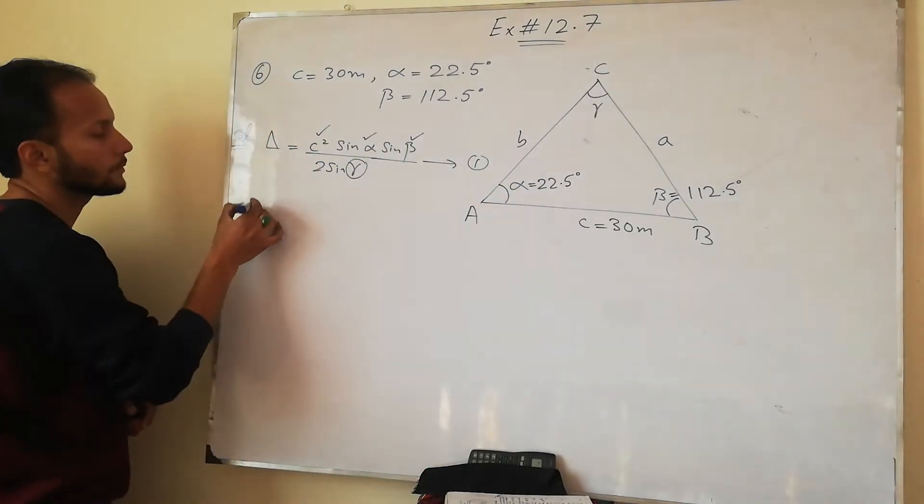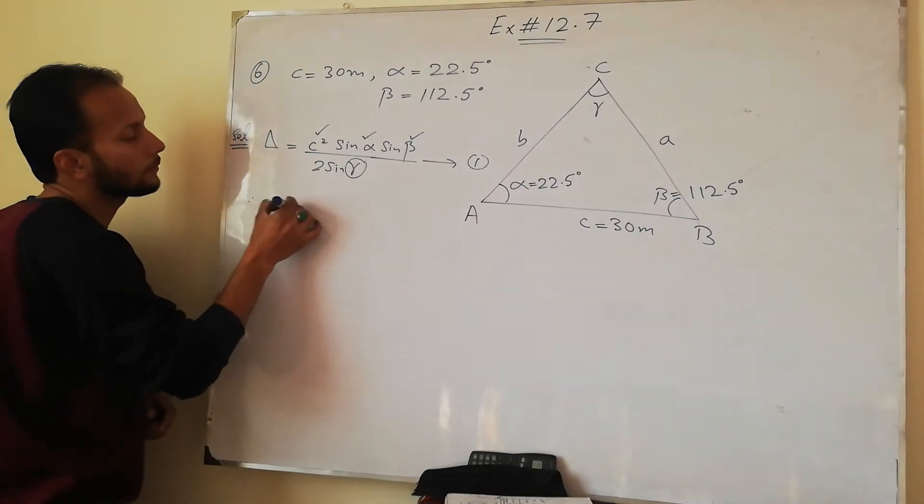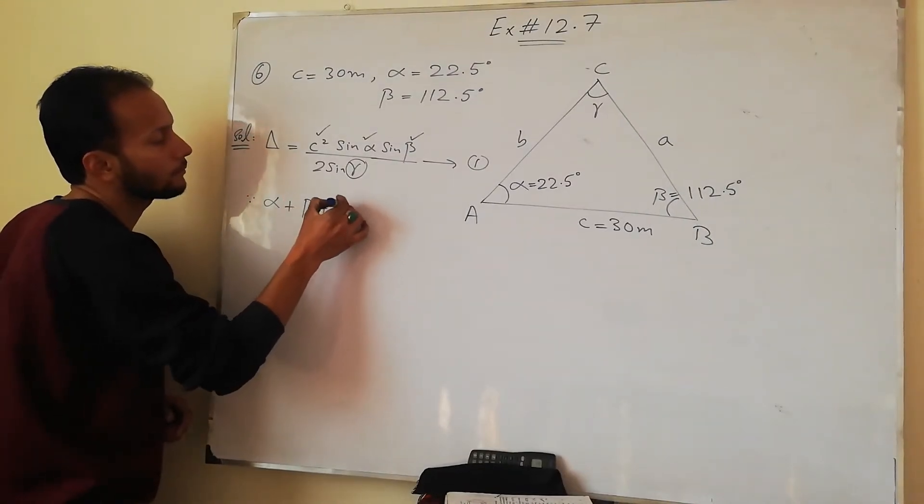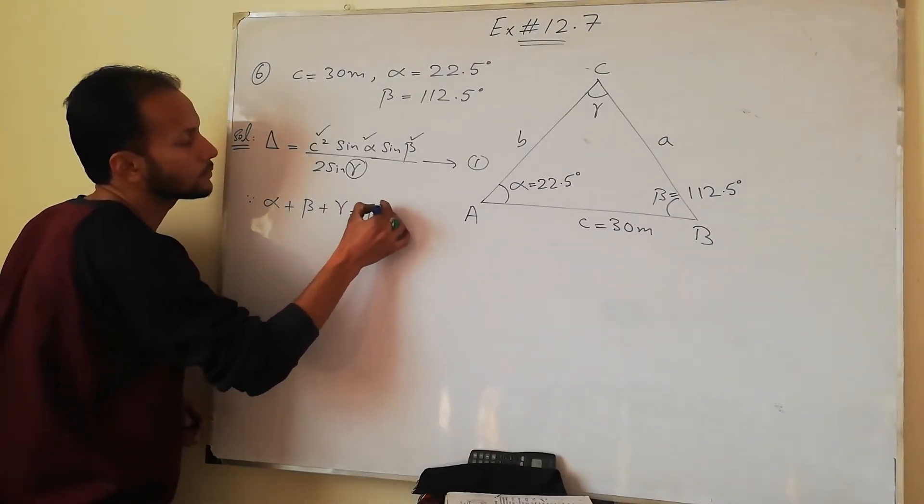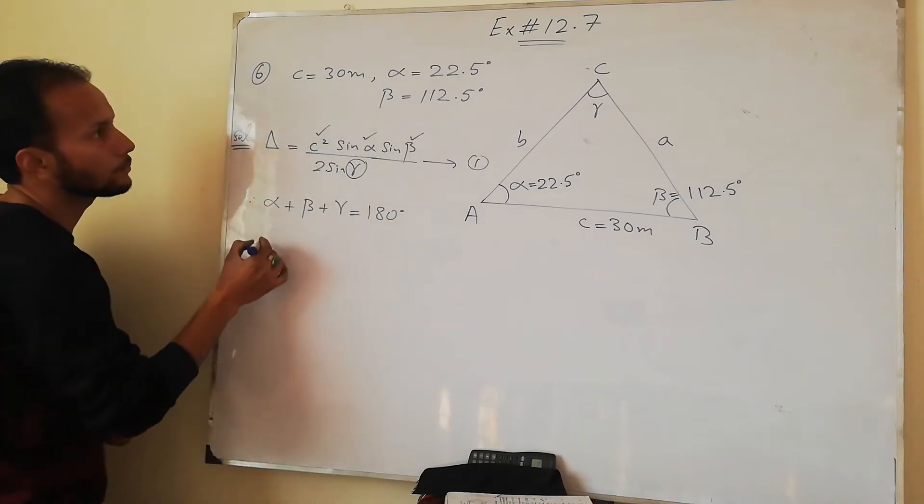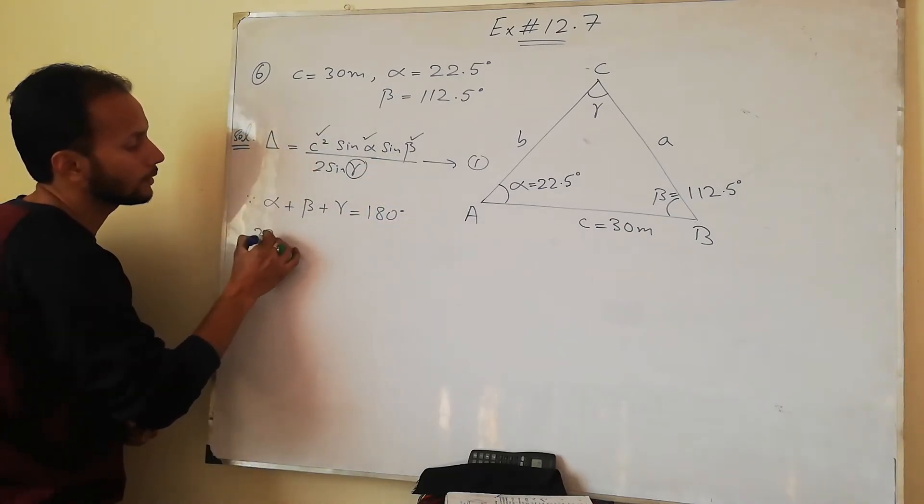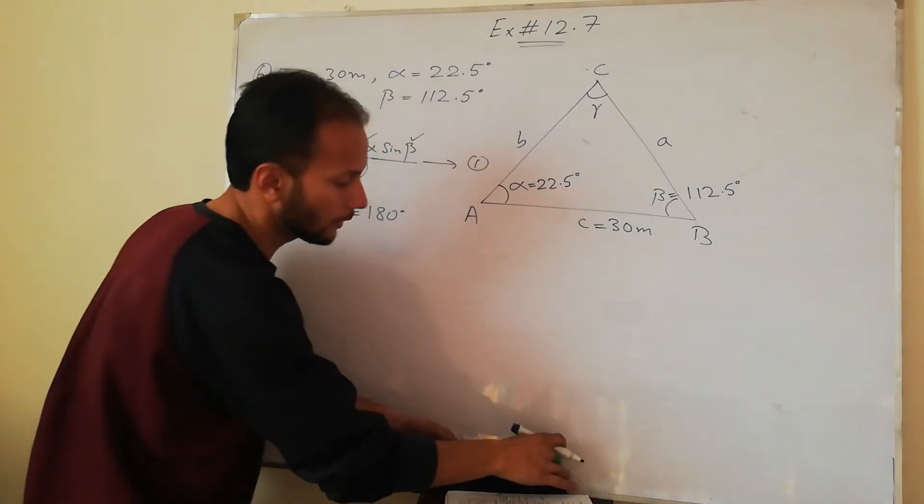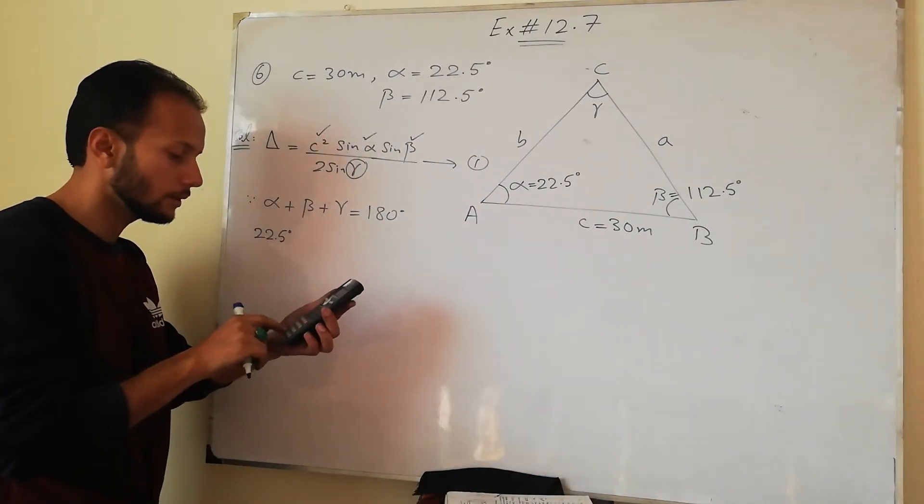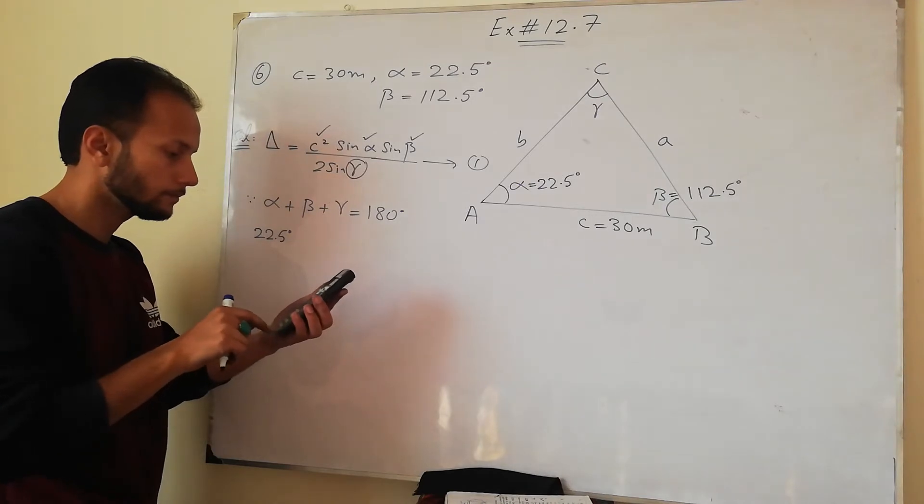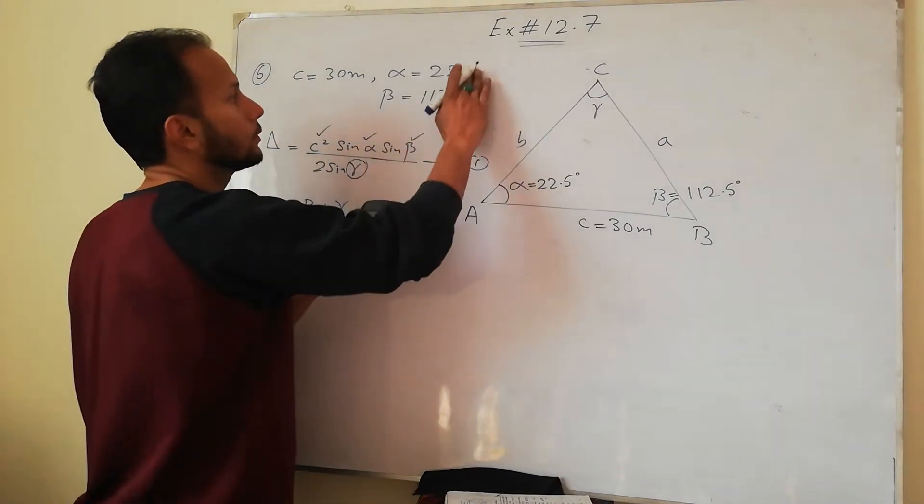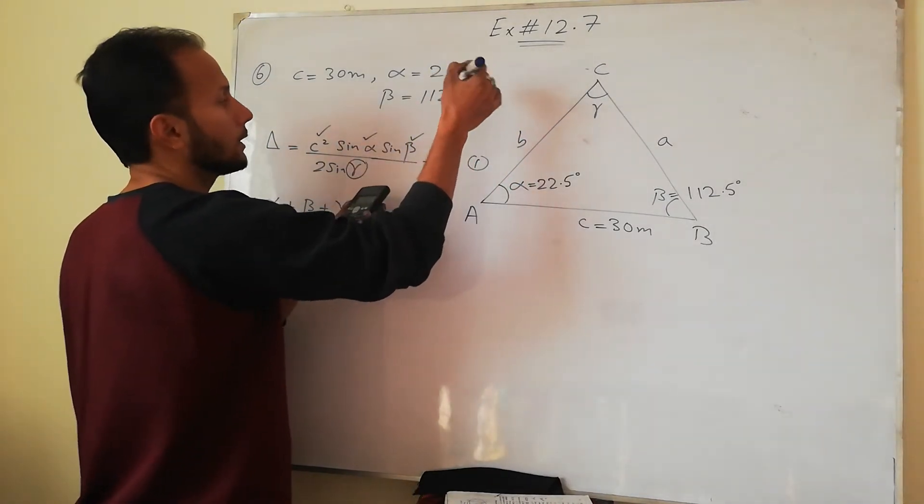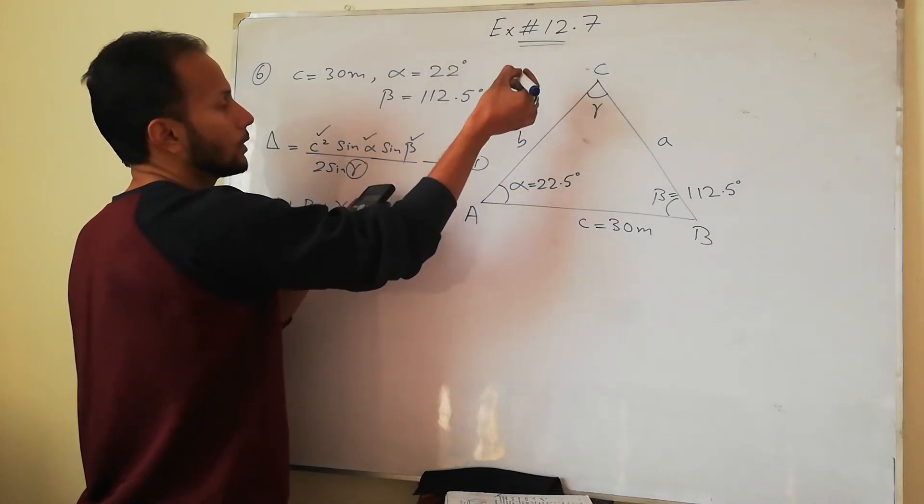So first, gamma angle value goes using alpha plus beta plus gamma equals to 180 degrees. So just value put into alpha, which is 22.5 degrees. Now I will write it in 0.5 and what I will write. So now I write it in seconds. If you are at points, then you write it in minutes.